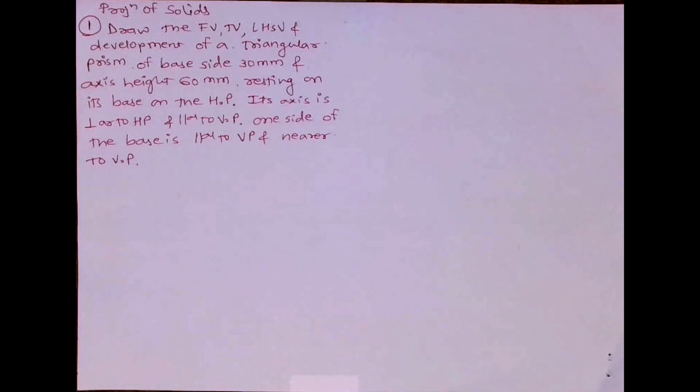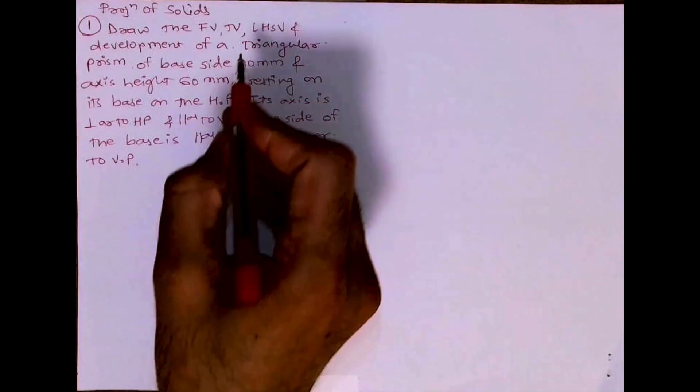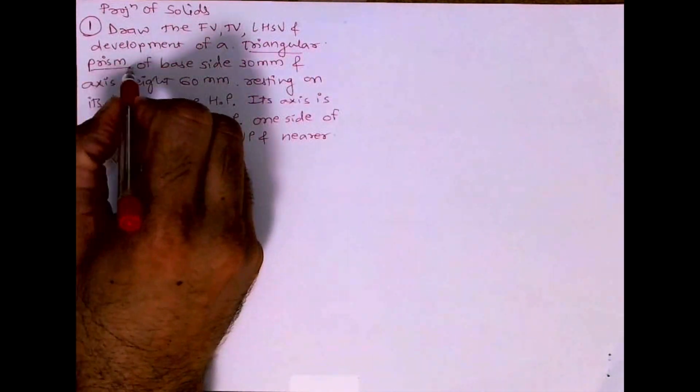Welcome to technical drawing. Today we'll see this sum where we have to draw front view, top view, left hand side view, and development of a triangular prism of base side 30 mm and axis height 60 mm resting on its base on HP. Its axis is perpendicular to HP and parallel to VP.